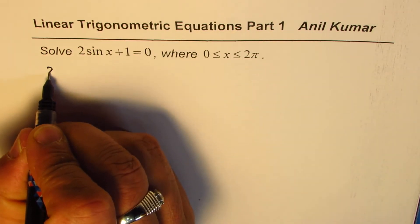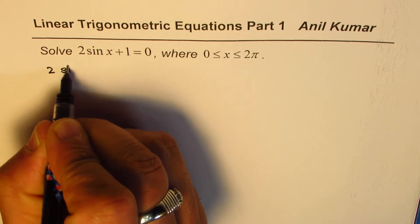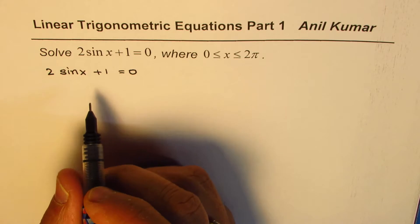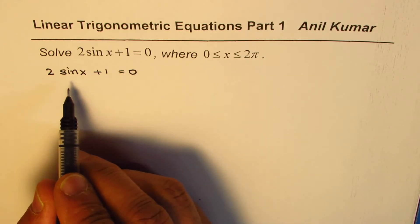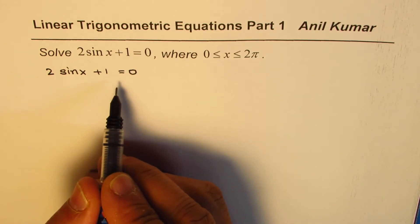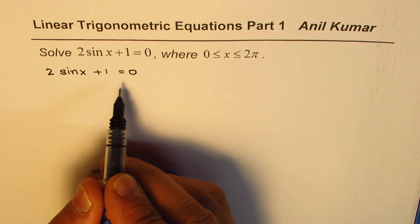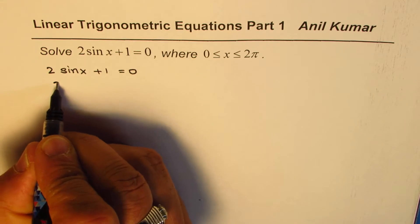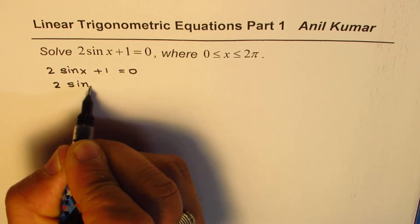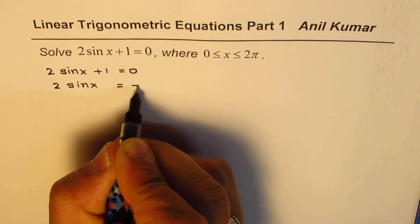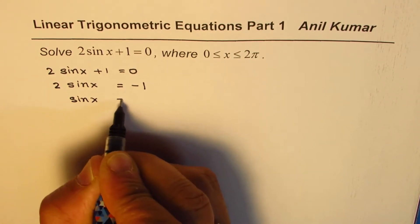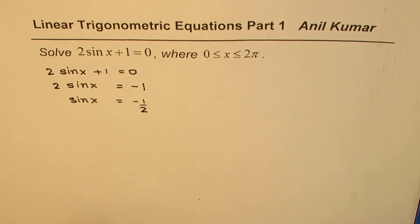Let us rewrite this question. It is 2sin(x) + 1 = 0. To solve a trigonometric equation we have to adopt the same process which is for normal equation. So we will isolate sin(x). Let us take away 1 from both sides. We get 2sin(x) = -1. Dividing by 2 we get sin(x) = -1/2.